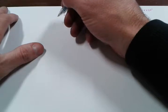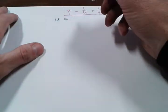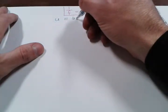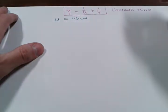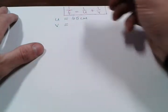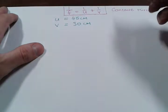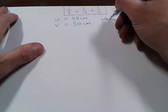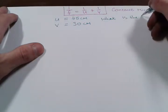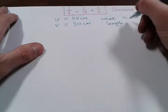In this question we're given the information as follows: the distance to the object U is 45 centimeters, and the distance to the image V is 30 centimeters. And then the question would be, what is the focal length of the mirror?